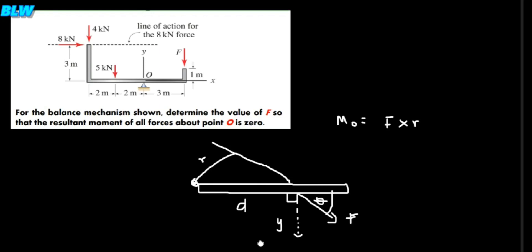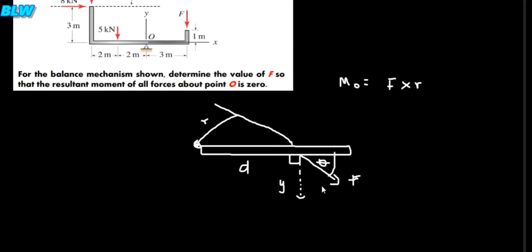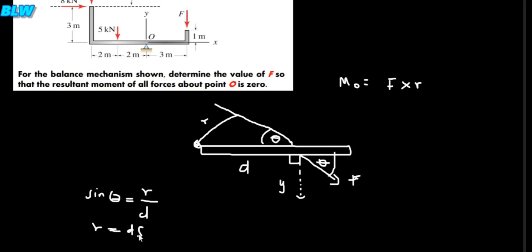Looking at the geometry, this angle here is also theta since they are opposite angles. So sin theta equals opposite over hypotenuse, which is r over d. Therefore r equals d sin theta. So the moment can be summarized as: moment equals force times d sin theta, which is also equal to force times r.